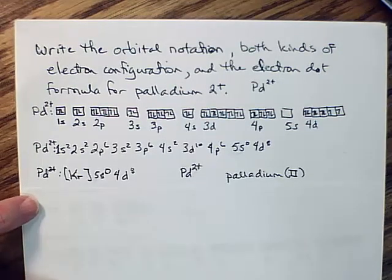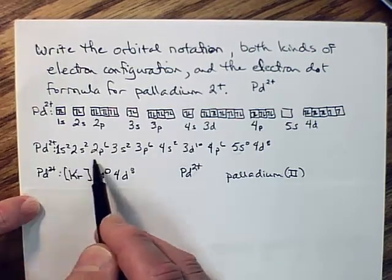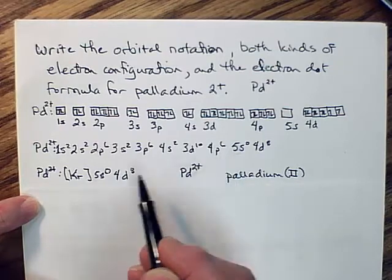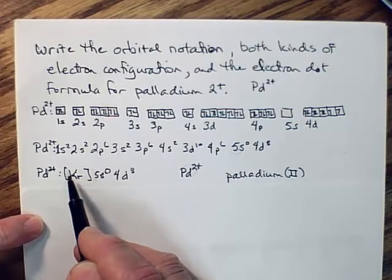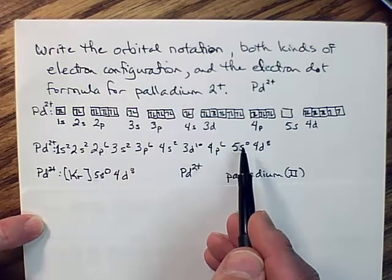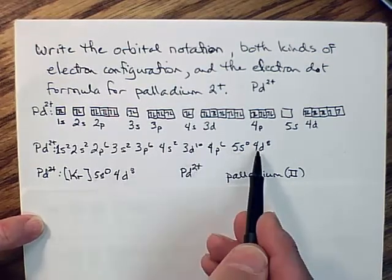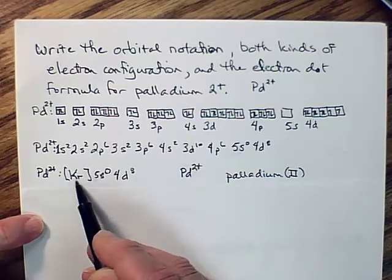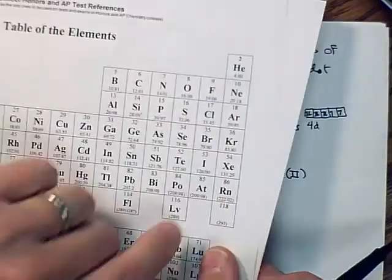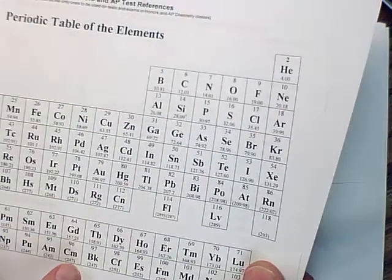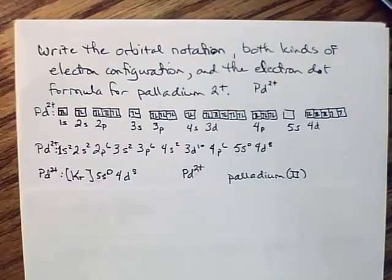And then, with the shorthand version, what we did was to take the electron configuration for krypton, which is all of this up to 4p6, and replaced it with the symbol for krypton in brackets. And so, we have 5s0, because we removed those two electrons from the 5s sublevel. We have 5s0 here, 4d8. So, this Kr, the symbol for krypton, replaces all of this up to 4p6. Krypton is the next lowest noble gas below palladium. Palladium is here, next lowest noble gas here.